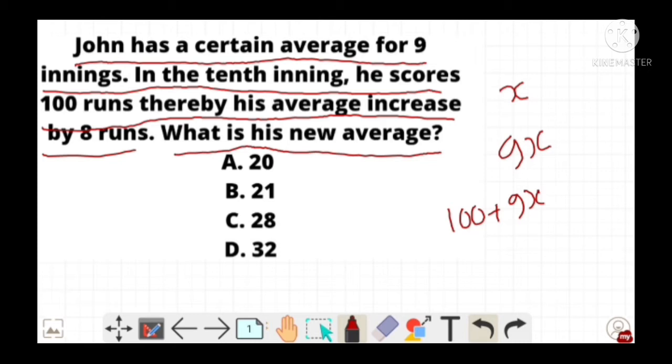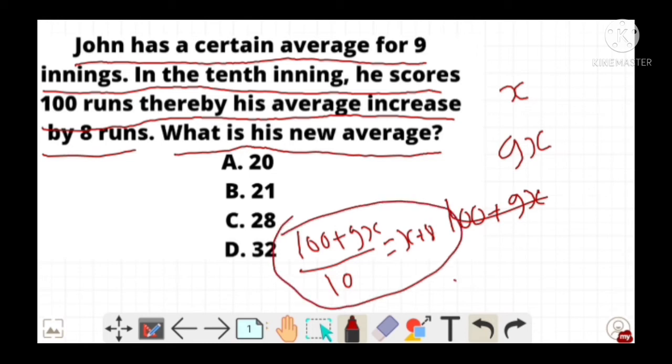And it must be equal to X + 8, as the question says his average increases by 8 runs after ten innings. On solving this expression, we get X equals 20.